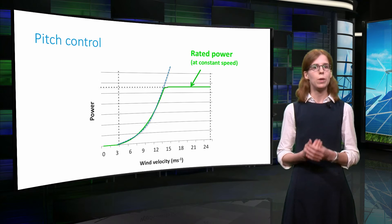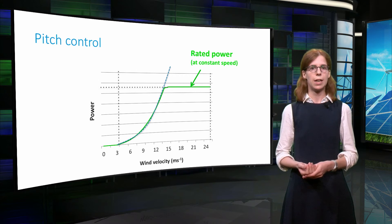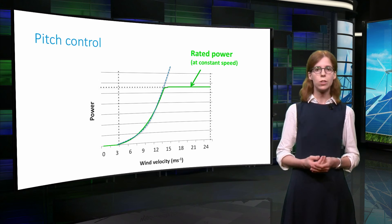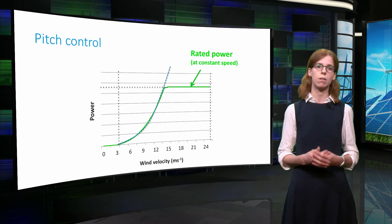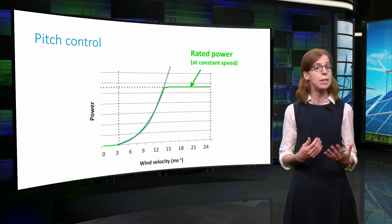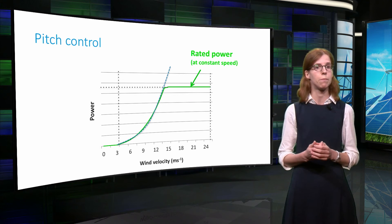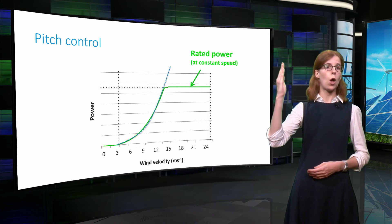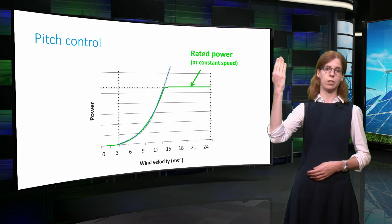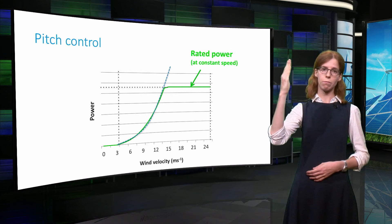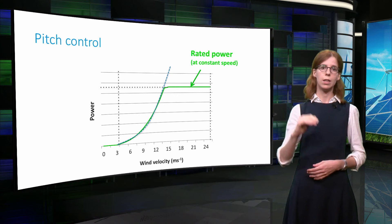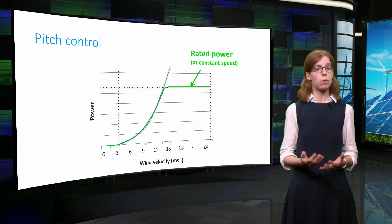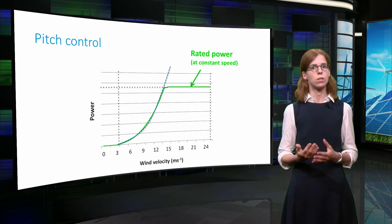Eventually, when rated power is attained, the power is kept constant by turning the blades along their axis, that is by pitching them. If my arm is the blade, a pitch rotation is this motion. This is called pitch control and is performed at constant torque.